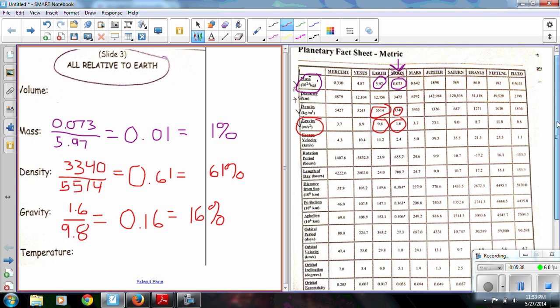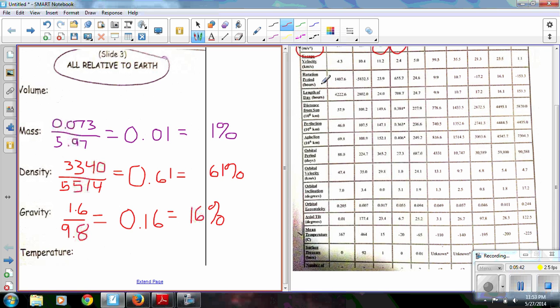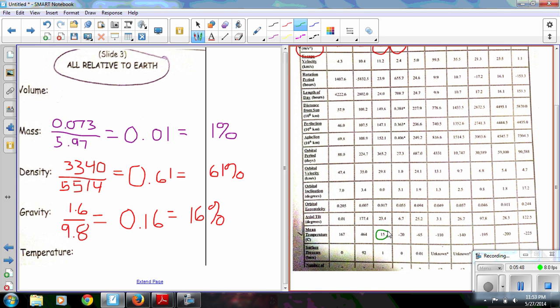Okay. And the last one, temperature. All right. The mean temperature on Earth is in Celsius. It is 15 degrees. And on the moon, it's negative 20 degrees. So, integer rules are going to apply.